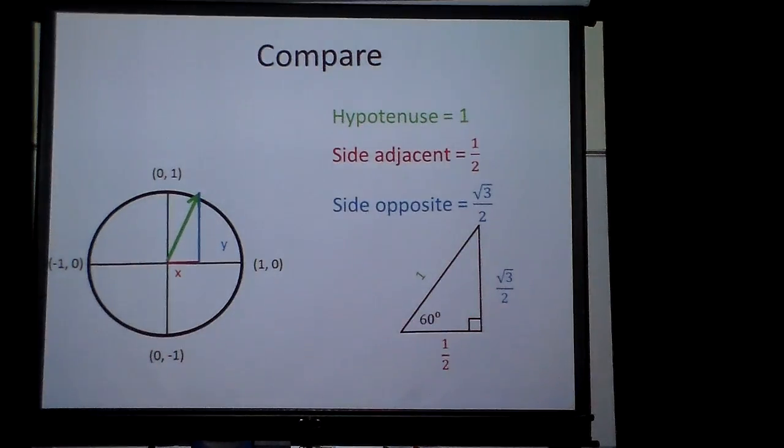You get your 30, 60, 90. So your side opposite is that. So therefore, notice now this is going to be square root of 3 over 2. That's going to be 1 half. So I get the point. 1 half, square root of 3 over 2.